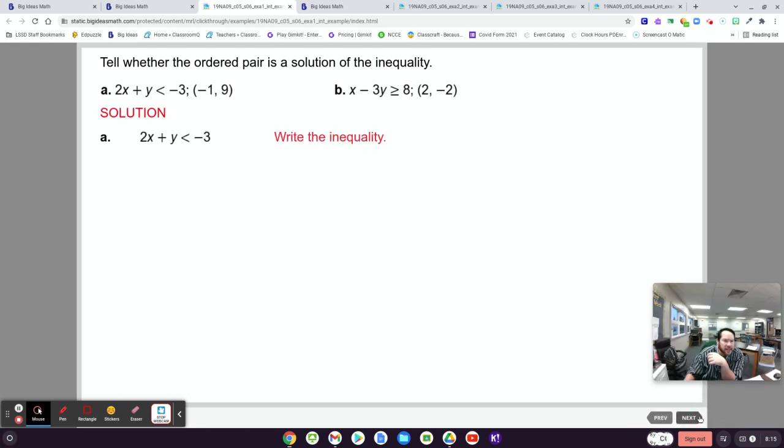So when you plug in negative 1 for x and 9 for y, you get 7, which is not less than negative 3. Therefore, this point right here, negative 1, 9 is not a solution to this linear inequality.